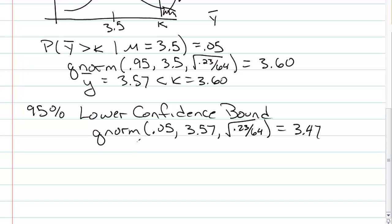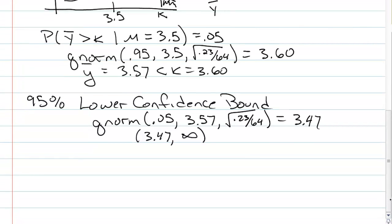And that gave us a value of 3.47. Our lower confidence bound was from 3.47 to infinity. And since it's a GPA, we really wouldn't go to infinity, we'd go to 4. So we compare that with our null mean, 3.5. Since that is in the interval, we fail to reject.